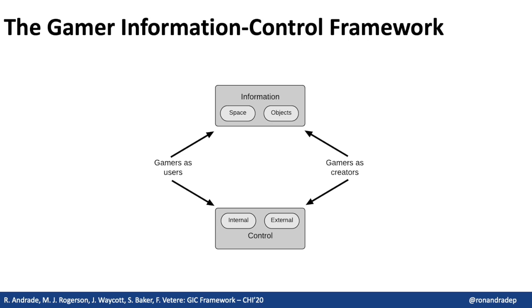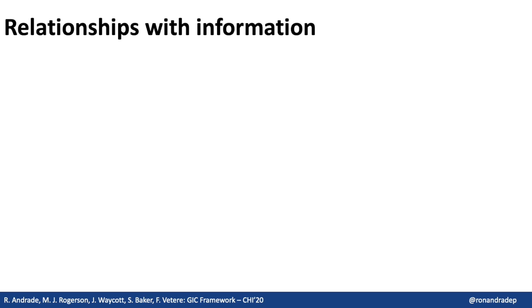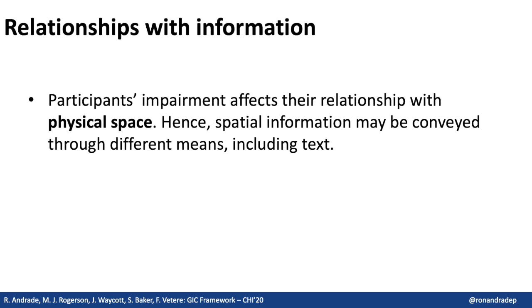We also found that relationships of control were key. These could be internal — for example, when a player uses text commands to interface with a digital game — or external, when a player interacts with the game through, for example, a screen reading tool or communications software. Importantly, these relationships appear whether the game is engaged with as players or as creators. In the field of orientation and mobility, literature supports the idea that people with visual impairment conceptualise spatial information differently. This highlights how important it is that we provide meaningful metaphors to convey spatial information. These metaphors need to recognise the unique skill sets developed through the lived experience of people with visual impairment and may include a variety of ways of presenting information, such as text or echolocation.